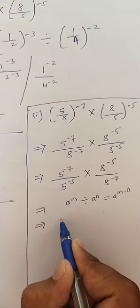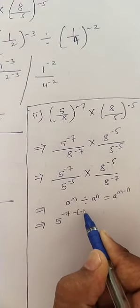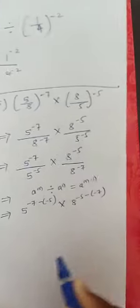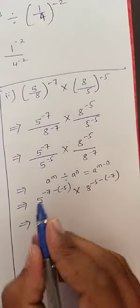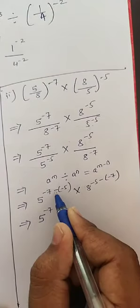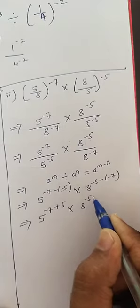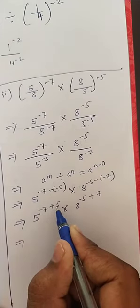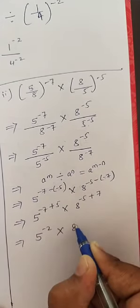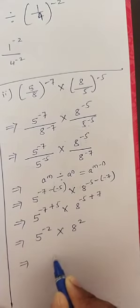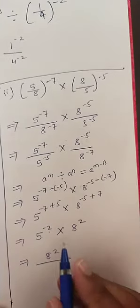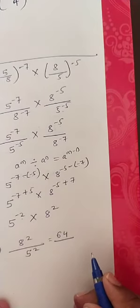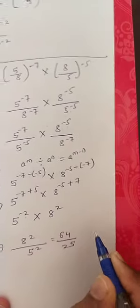Applying the formula: 5^(-7 - (-5)) × 8^(-5 - (-7)) = 5^(-7+5) × 8^(-5+7) = 5^(-2) × 8^2. Since 5^(-2) is negative, make it positive: 8^2 / 5^2. So 8^2 = 64 and 5^2 = 25. The required answer is 64/25.